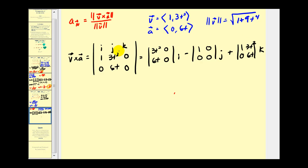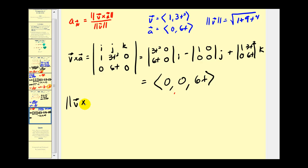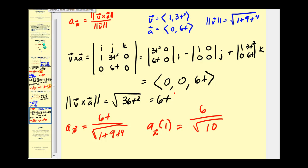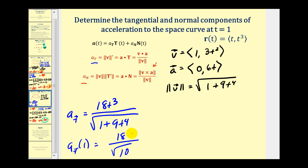For the normal component, we set up v cross a with row two from v: one, three t squared, zero; and row three from a: zero, six t, zero. Using cofactor expansion, the x and y components are zero, and the z component is six t minus zero, giving six t. The magnitude of the cross product is the square root of thirty-six t squared, which is six t. So the normal component is six t divided by the square root of one plus nine t to the fourth. At t equals one, this gives six over the square root of ten.